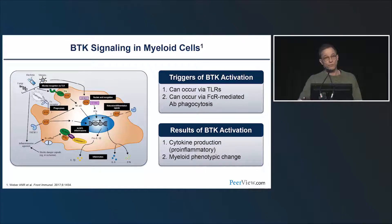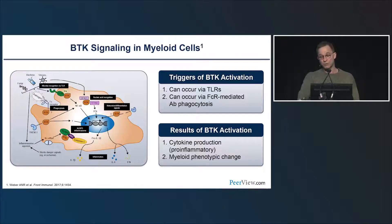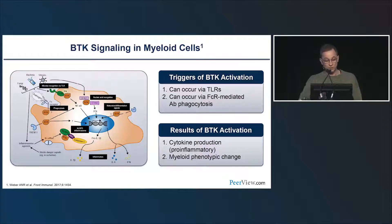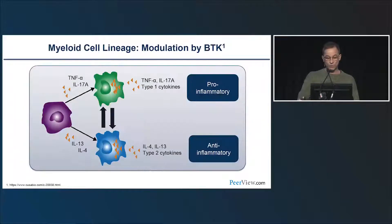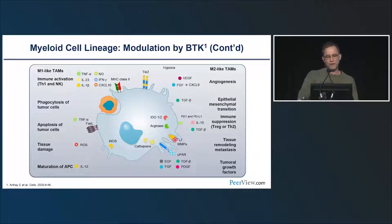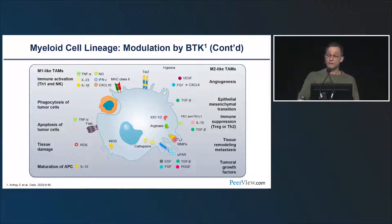In autoimmunity, an autoreactive B cell sees its autoantigen through the B cell receptor, with BTK relevant to downstream signaling. This may influence the B cell's capacity to mediate pathologic effects—activating T cells through cytokines, producing autoantibodies, and interacting with myeloid cells that themselves also express BTK. In myeloid cells, multiple pathways involve BTK signaling, including toll-like receptors and FCR-mediated antibody or immune complex phagocytosis. Inhibiting BTK is expected to target both B cells and myeloid cells directly and indirectly.